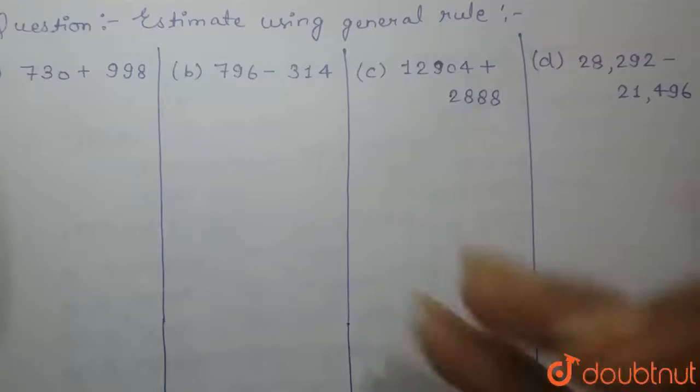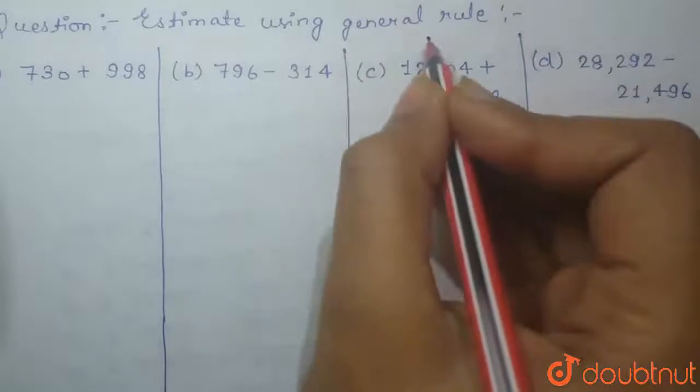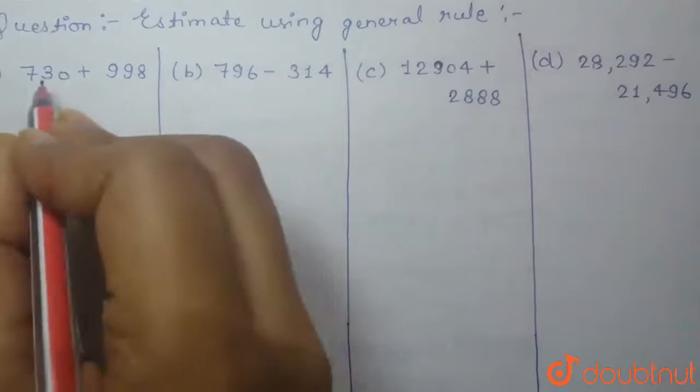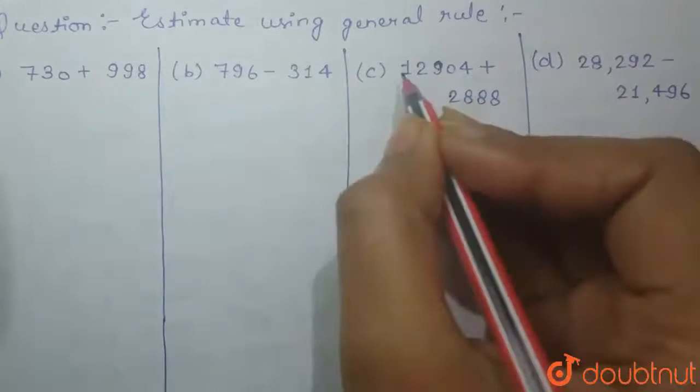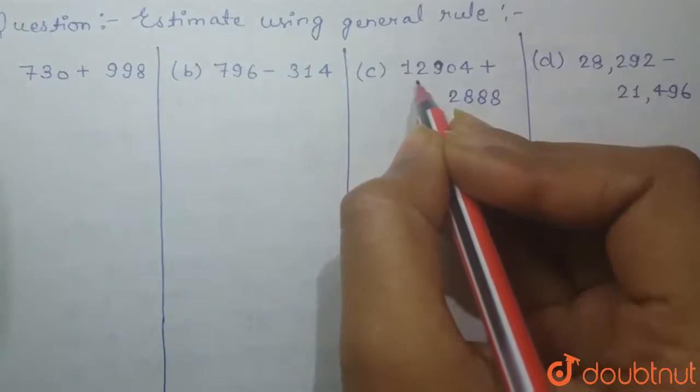In this question, we have to estimate using general rule. General rule says if a number is in hundreds, it will be rounded off to the nearest hundred. And if a number is in thousands, it will be rounded off to the nearest thousand.